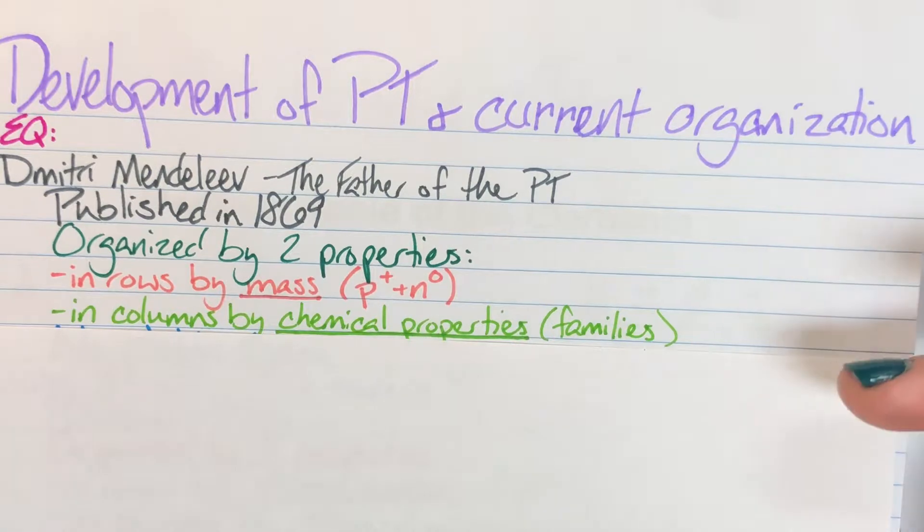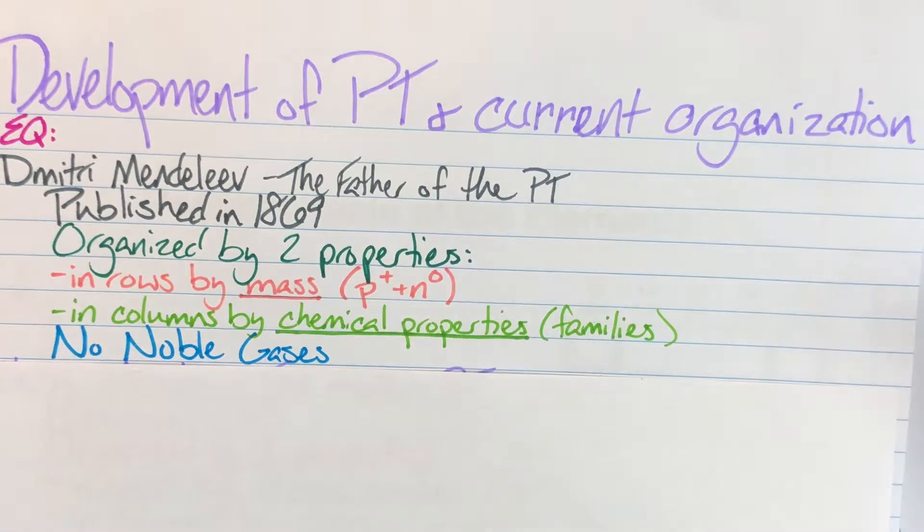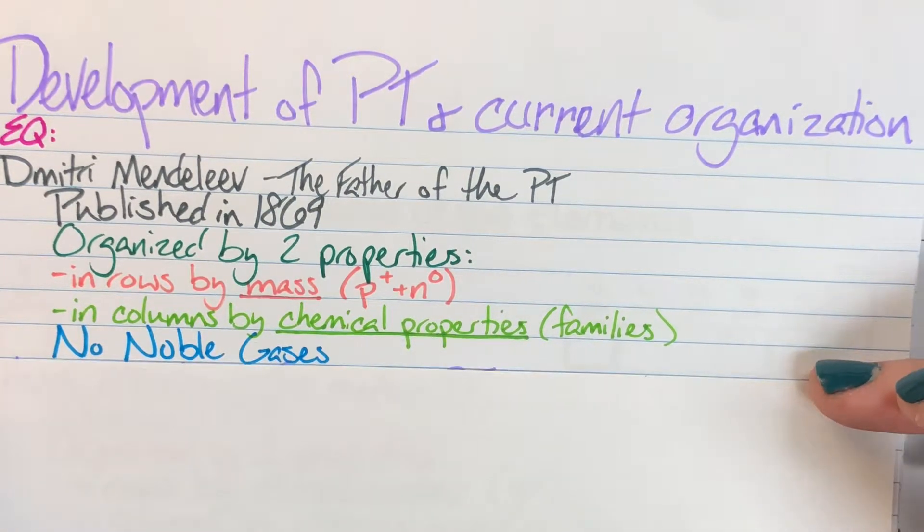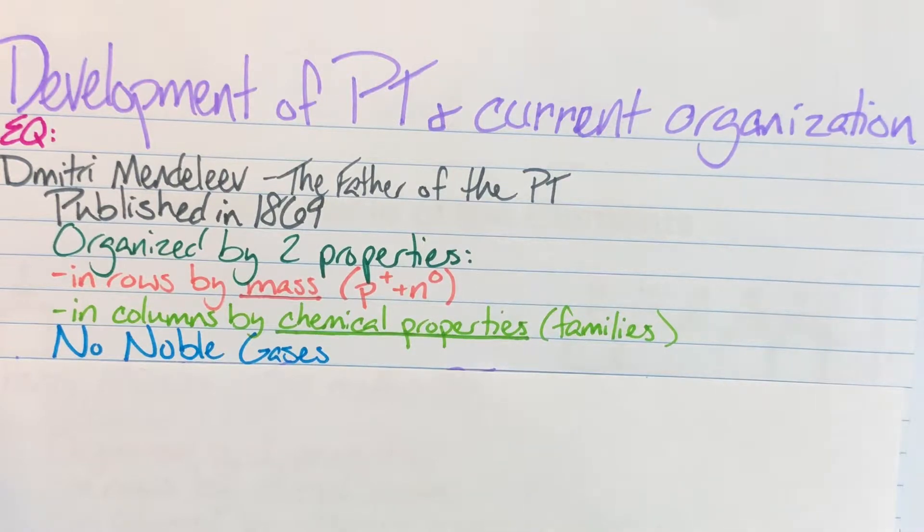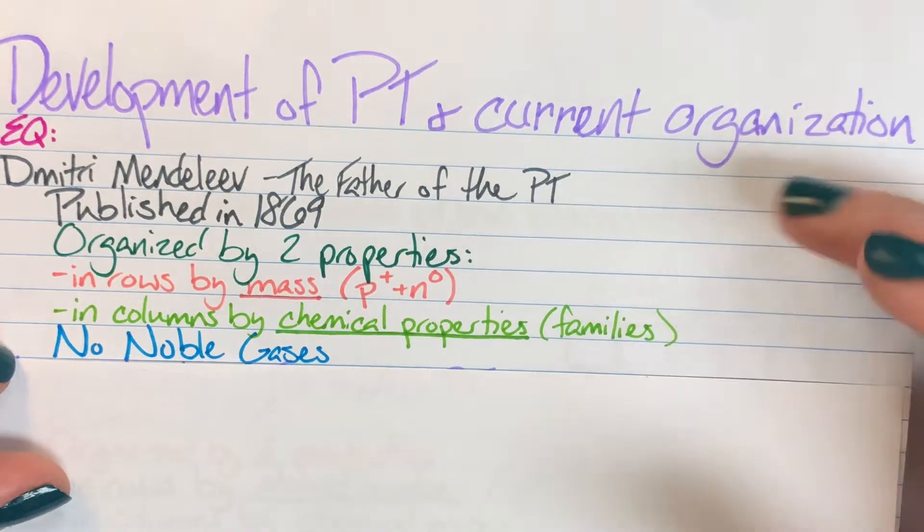With these two things he was able to predict elements that did not exist yet based off of holes in his table. His table did have some shortcomings however. He did not have noble gases on his table because they were not reactive and they had not been discovered in 1869.